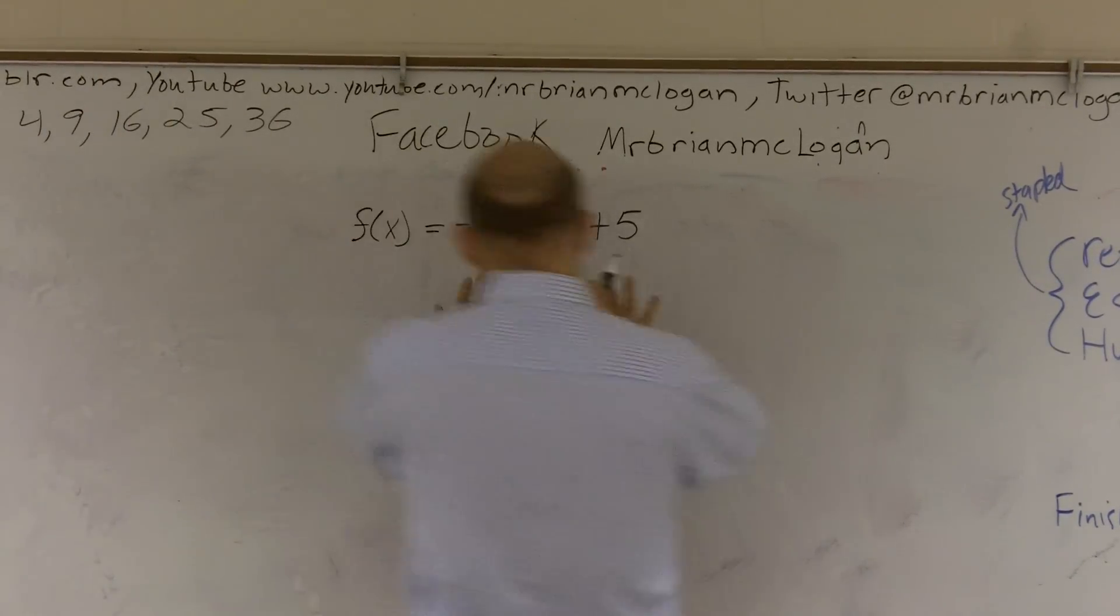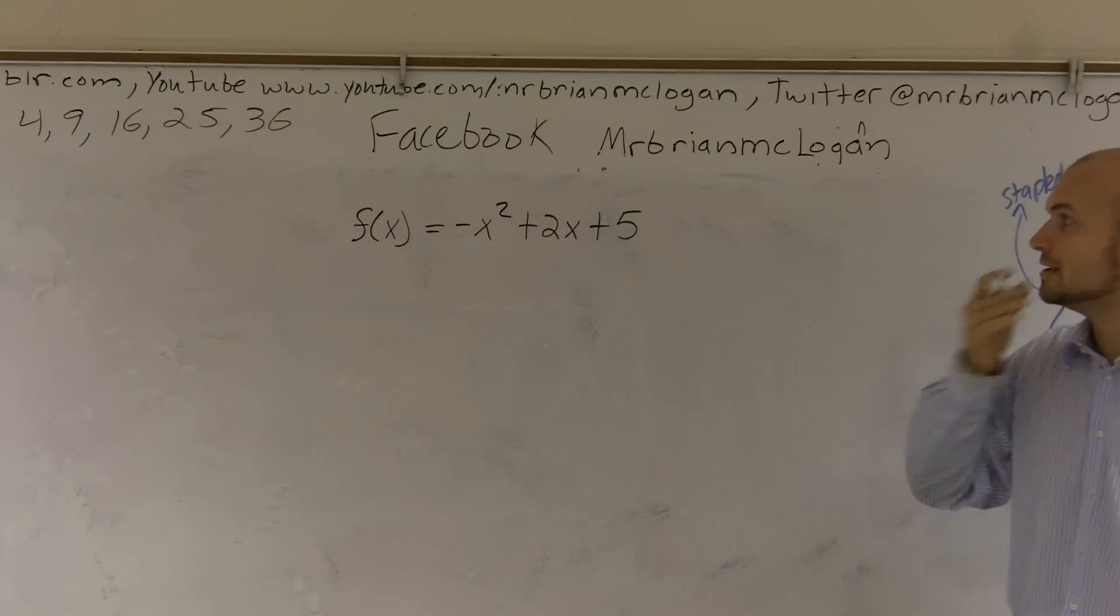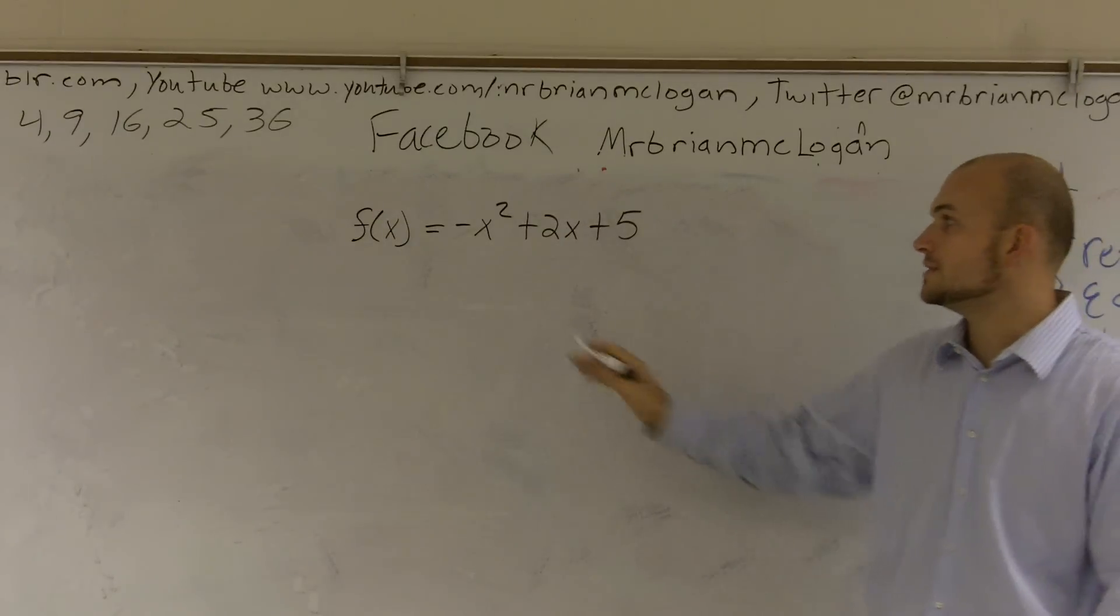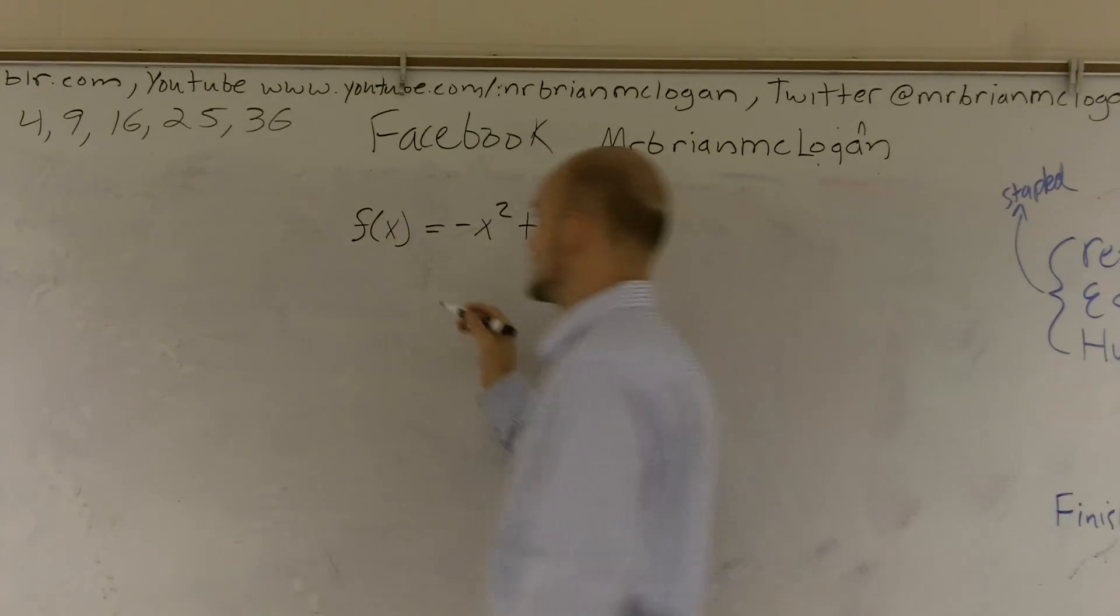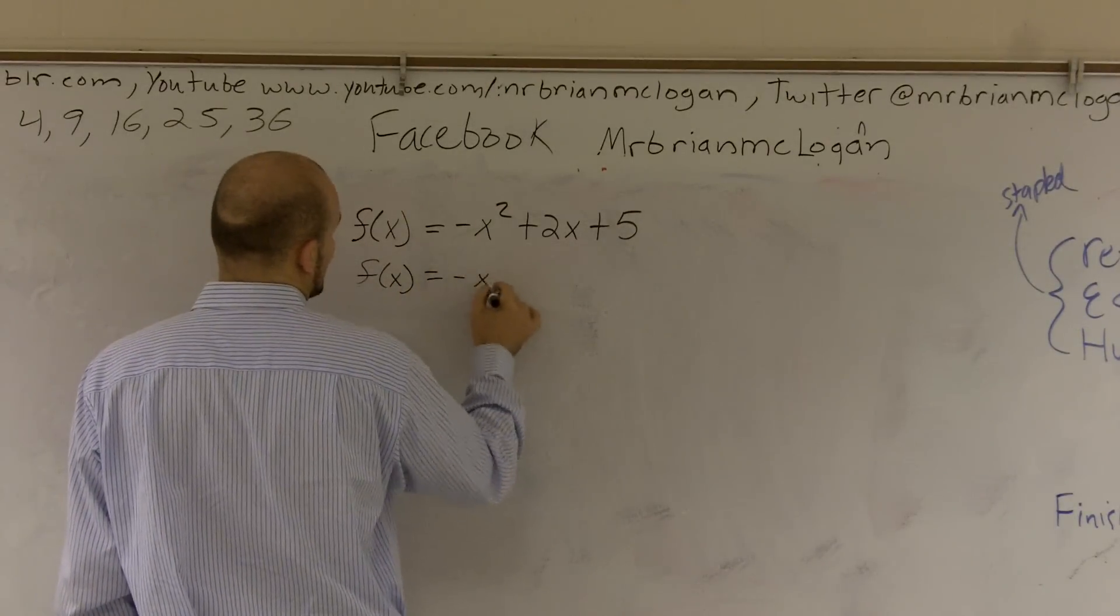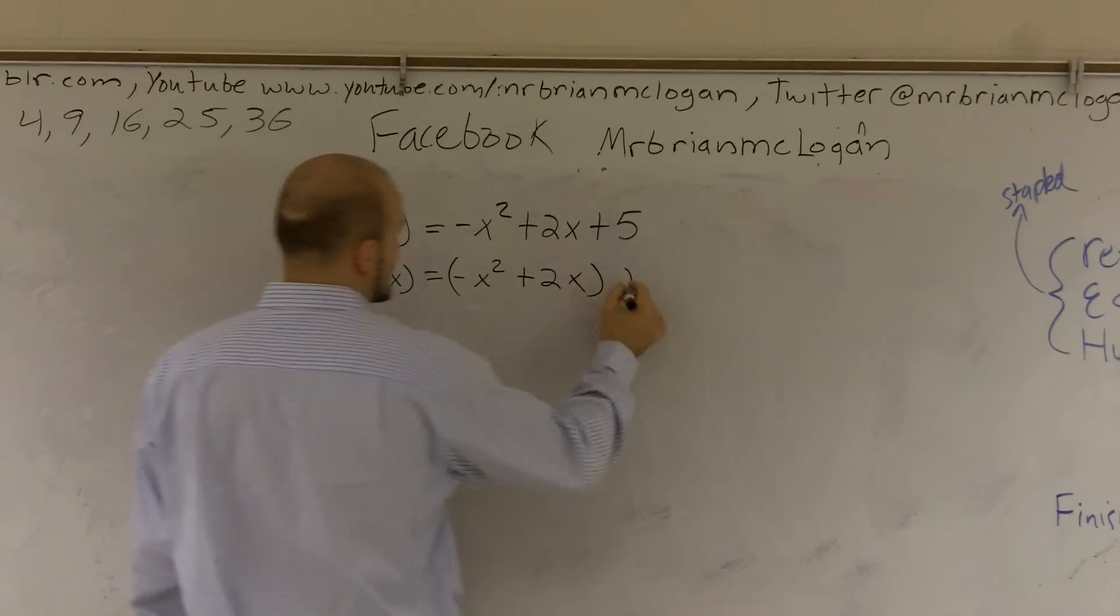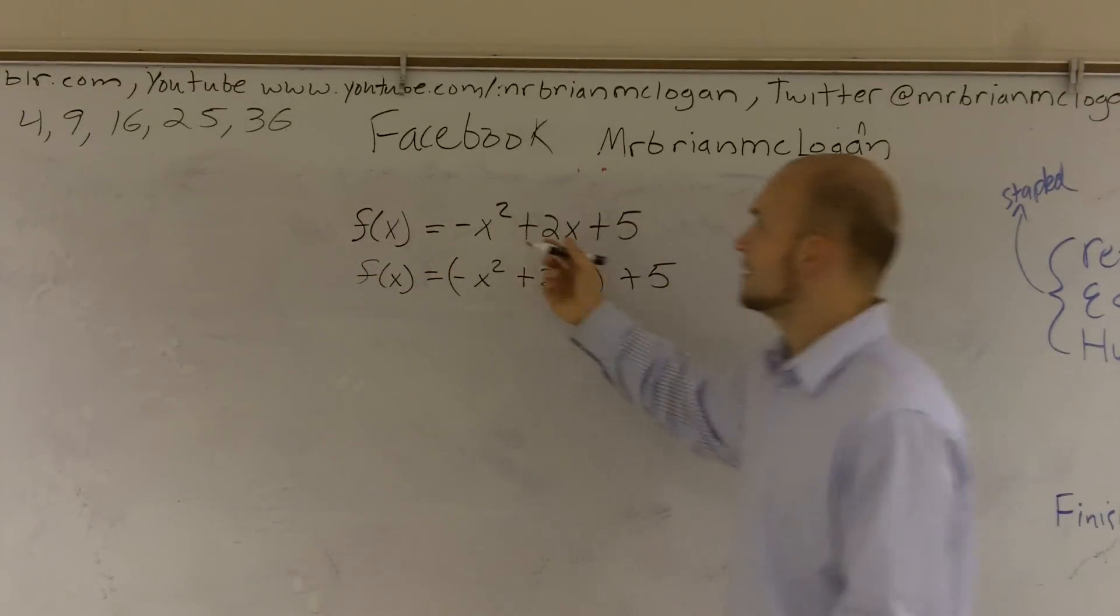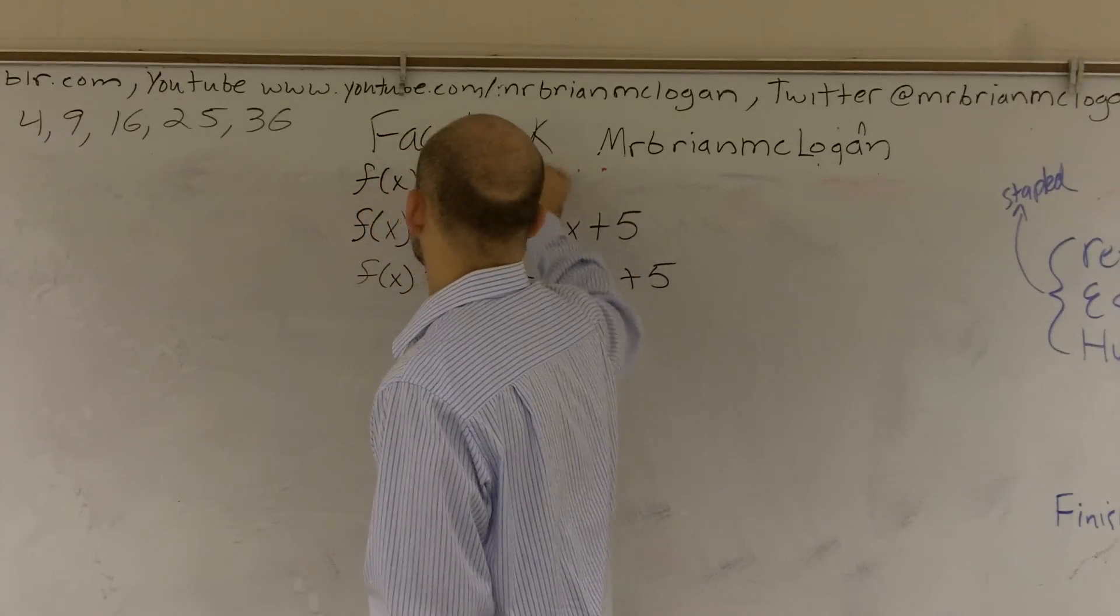So what I'll do is I'm going to show you how to complete the square when you have a negative in front of your x squared. The first thing that I want to do is make sure that when I complete the square, I'm going to put parentheses around my x terms. So that's like my first step. And the reason why I put parentheses around my x terms is because, remember, our goal is we're going from quadratic form.